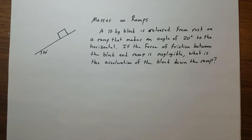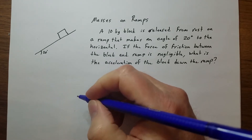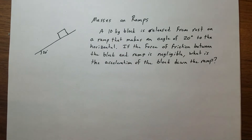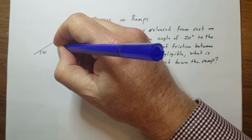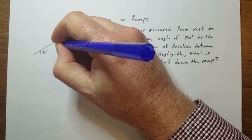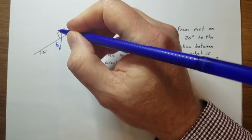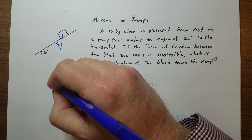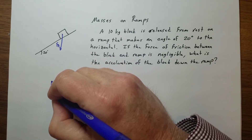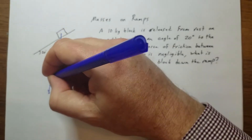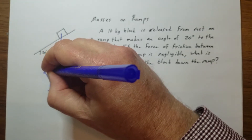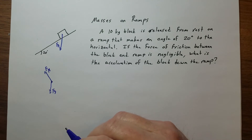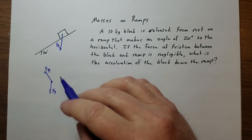If we just dropped it, the acceleration would be 9.8, but the problem is we're not dropping it — it's sliding down a ramp. Gravity is still what's causing it to move, so we have a gravitational force on it. If we draw the free body diagram, we have gravity acting down and the normal force perpendicular to the surface.